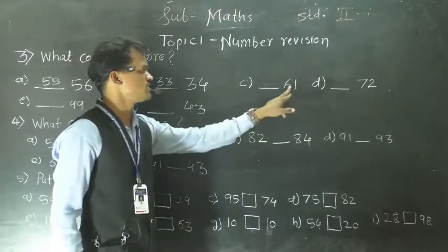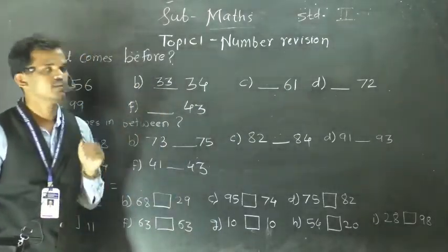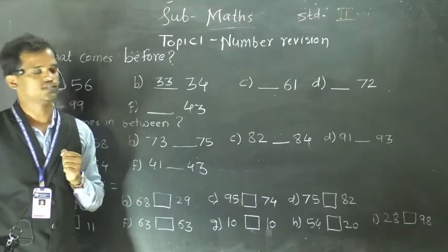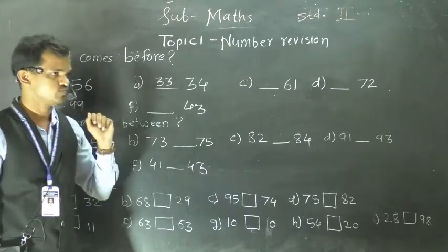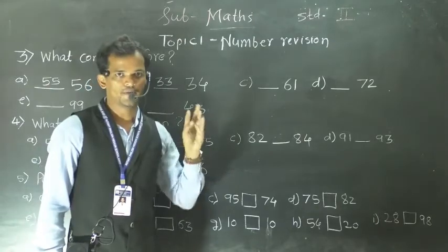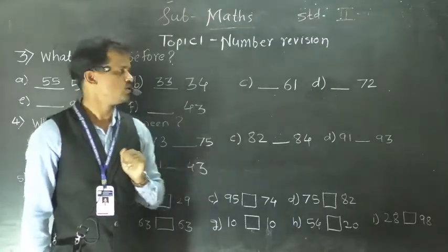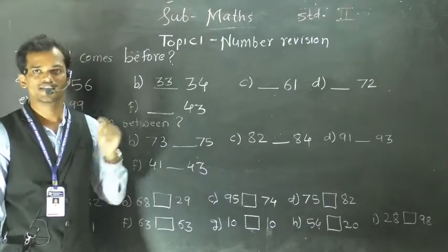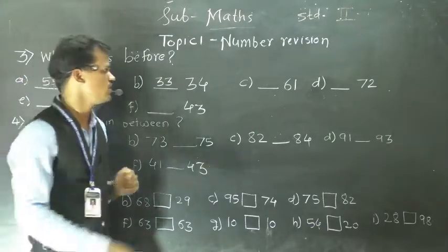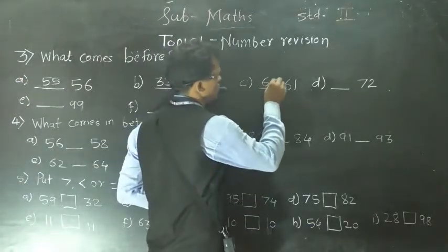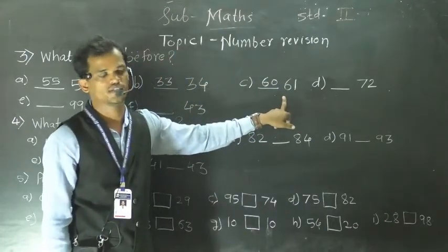Next: see, 61 is given and we have to find the before number of 61. So see here: 58, 59, 60, 61. So before 61, 60 comes in number series. So the before number of 61 is 60.